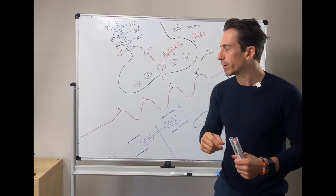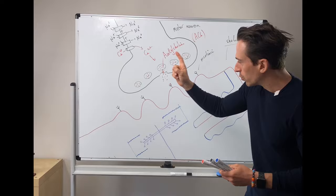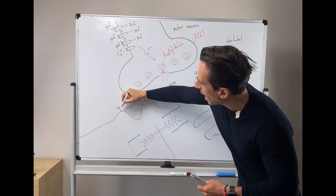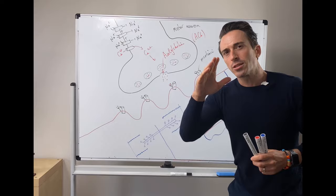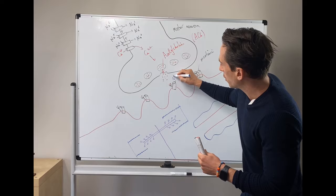Acetylcholine diffuses across and binds to acetylcholine-specific receptors on the muscle membrane. When it binds, it causes the receptor to open up channels. These channels are not voltage-gated — their gate is chemical. The chemical is acetylcholine, so they're called ligand-gated or chemically-gated channels. Acetylcholine binds, flips the lid, opens that channel up, and what enters? Sodium. Sodium is on the outside of the cell and moves in.